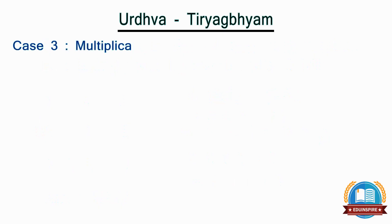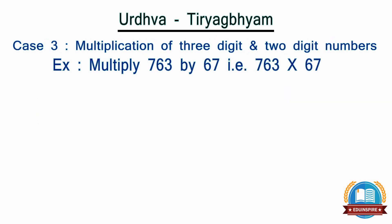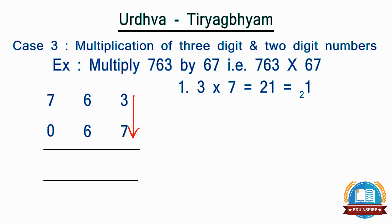Now let us take another example of a 3-digit and a 2-digit number, i.e. 763 by 67. Before we start multiplication, we will pad the number 67 with 0, so 67 becomes 067. Now it becomes the same as multiplication of 3-digit numbers. Step 1: multiply vertically the rightmost digits, i.e. 3 by 7, which becomes 21. We will retain 1 and carry over 2.